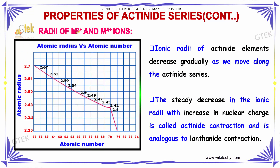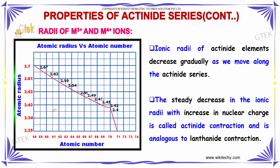Radii of M3+ and M4+ ions: The ionic radii of actinide elements decrease gradually as we move along the actinide series. The steady decrease in ionic radii with the increase in nuclear charge is called actinide contraction, and it is analogous to the lanthanide contraction.